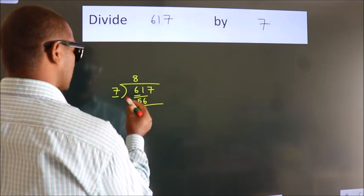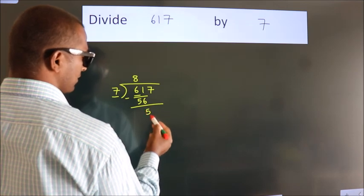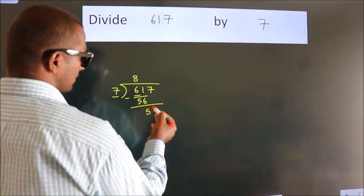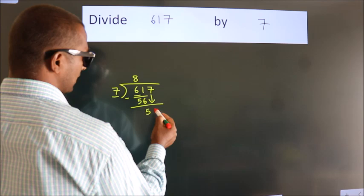Now we should subtract. We get 5. After this, bring down the beside number. So, 7 down.